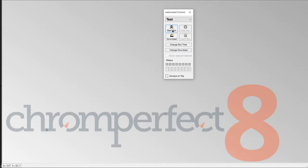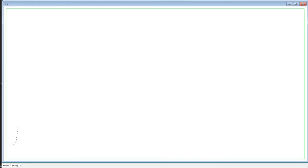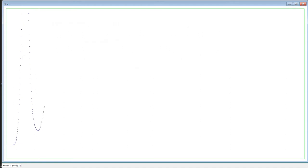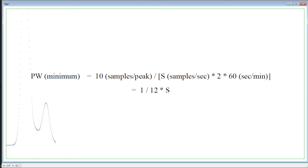The minimum effective peak width is determined by the sample rate. Assuming that the peak width at half height is one-half the baseline width, to have at least 10 data points across the full baseline width of the peak, the peak width at half height must be at least 5 sample intervals. Since the sampling rate s is given in samples per second and the peak width is given in minutes, the following formula gives the minimum peak width for any sampling rate: peak width minimum equals 10 samples divided by peak divided by s samples per second multiplied by 2 multiplied by 60 seconds per minute equals 1 divided by 12 multiplied by s.